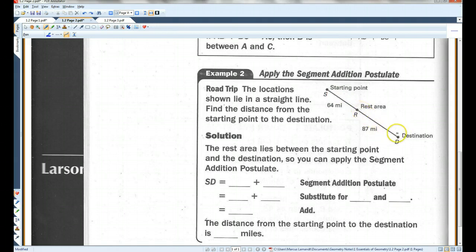Now remember, when you're naming segments, you use two letters. So SD is going to be SR plus RD. That's the Segment Addition Postulate - you can add these two pieces together to get the whole thing.